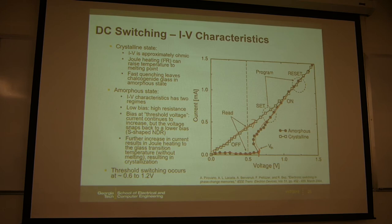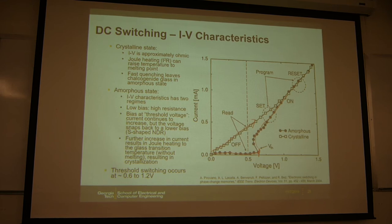For reset you need the quench process — you need to remove the voltage very quickly. DC sweep is very slow, each step is on the order of milliseconds, so you cannot do that. A typical DC measurement setup is not responsive enough to perform the rapid quench needed for the reset operation.